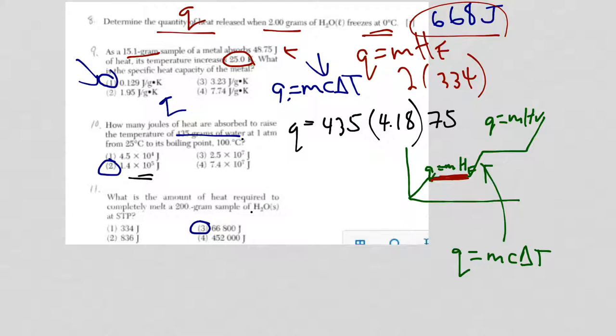The last one here, question 11. It's the amount of heat, so Q again, required to completely melt. So we're back over here again. 200 gram sample of water. Okay, so Q equals MHF. So that's going to be 200 grams times the 334, which is on the front of the reference table. And you get choice 3.